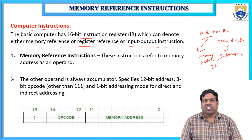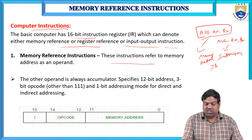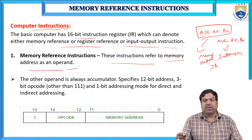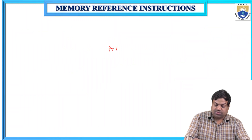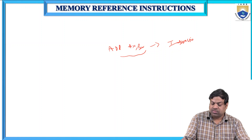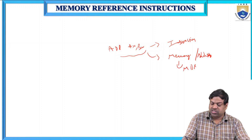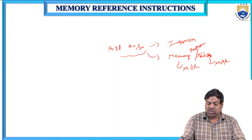Memory reference instructions refer to a memory address as an operand. For example, taking an instruction like ADD AX, BX — this instruction needs a memory address to find its data. That is why we have a memory data register and a memory address register; we need a memory reference for this.